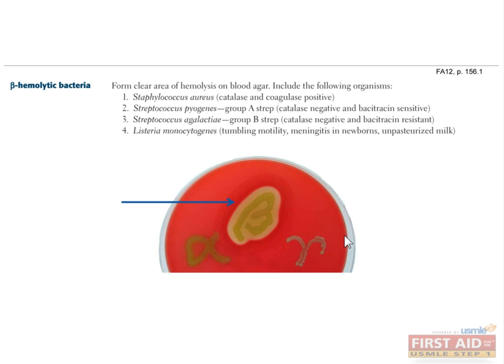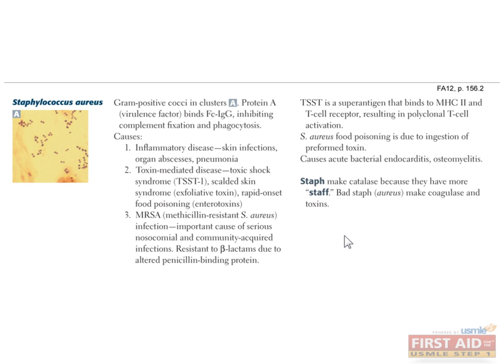You should also know that there are two other gram-positive organisms that have hemolysin and can demonstrate beta hemolysis. These are staph aureus and listeria. Staph aureus is our coagulase and catalase-positive gram-positive cocci.